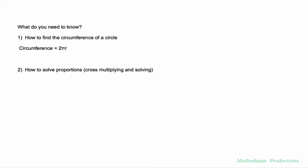What do I need to know to find out the arc length? The very first thing that you need to know is how to use a circumference formula, which is given by 2 times pi times the radius, and how to solve proportions by cross multiplying and solving.